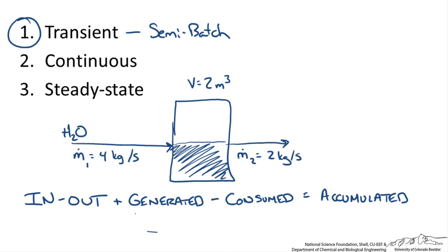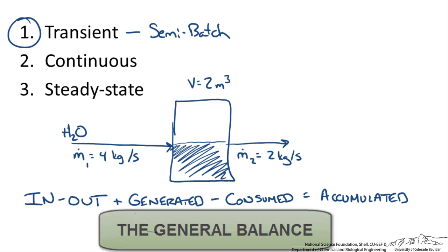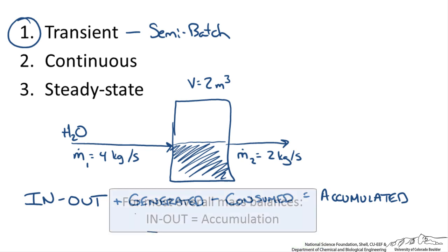What I have written here is what is known as a general material balance. A mass balance has to be conserved. Whatever mass goes into a system has to come out. Mass can't just be destroyed, nor can it be generated. Of course there are some exceptions to that when we talk about nuclear reactions, but for most things that you are going to see, mass cannot be generated or consumed.